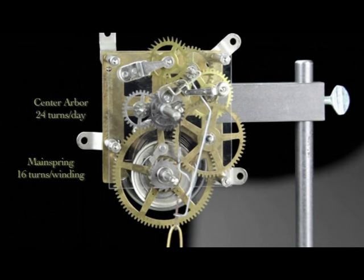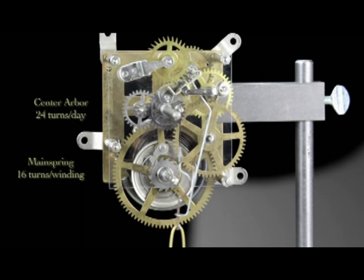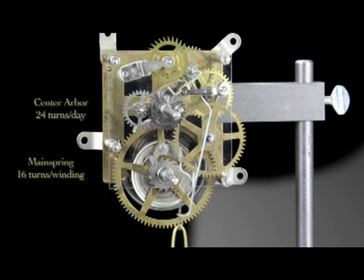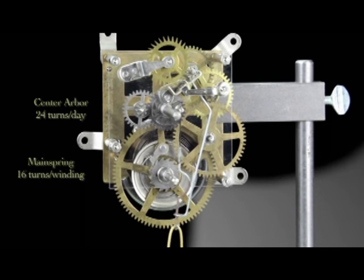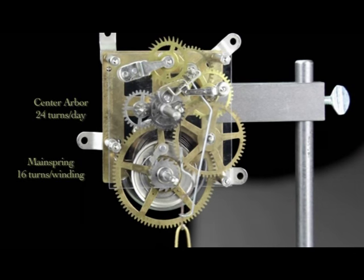At the very least, our center arbor must turn once per hour or 24 times per day. If we were to use the 16 turns of power stored in our mainspring directly without going through the wheel train, the power from the spring would only last 16 turns or 16 hours.